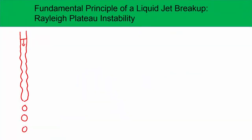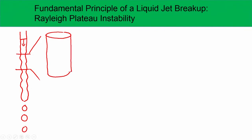If there was no instability, the equilibrium state of a segment of the liquid jet would be a cylinder. We define the surface tension of this liquid cylinder as sigma, density as rho, the uniform pressure inside as p0, the outward surface normal, and the radius as r0. This is the equilibrium or steady state.